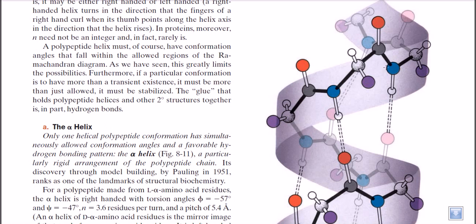It is called alpha helices because there are also beta helices and other different types. In this case, if we draw the single linear amino acid sequence with alpha C, N and the backbone, the backbone will form this kind of structure just because of one type of bond — a bond that holds the structure together like glue. That bond is the hydrogen bond. It is a very simple, very weak bond, but when thousands of these bonds are working together to hold the structure of the polypeptide chain, the chain becomes really strong.